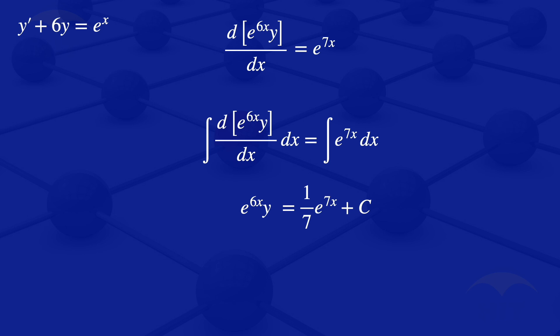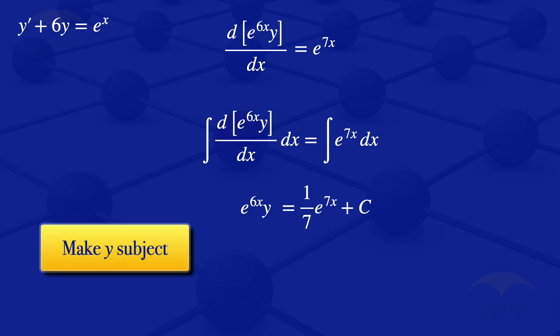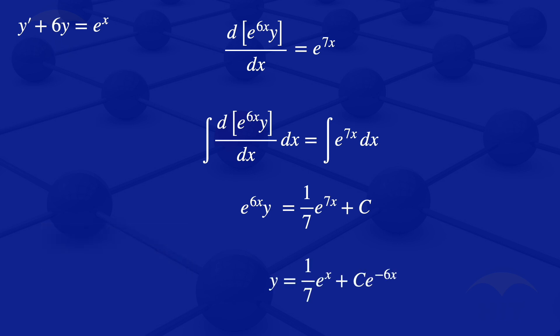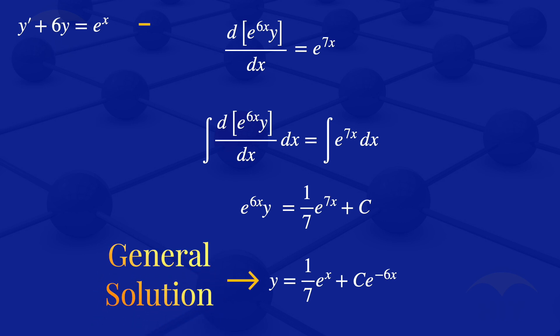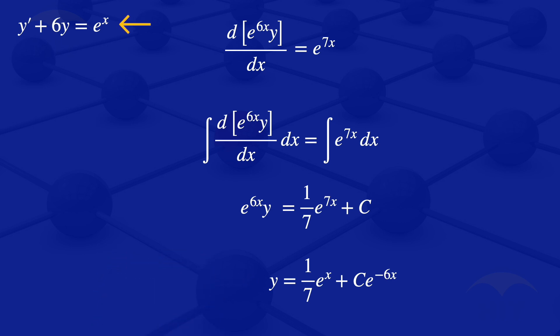The next step is to make y the subject. We divide throughout by e^(6x), giving us y = (1/7)·e^x + C·e^(-6x). This is the general solution of this first-order ODE.